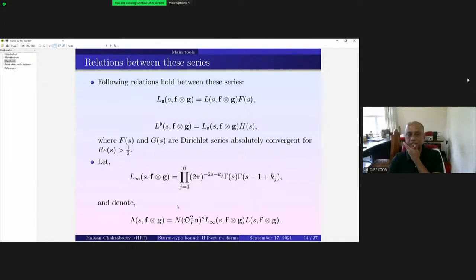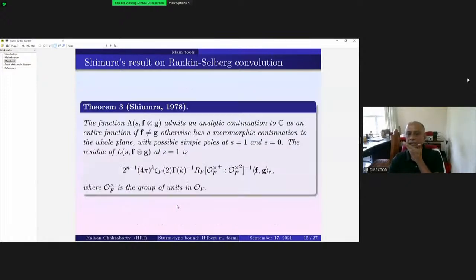Now this is a result of Shimura who tells you that the function, this lambda, admits an analytic continuation to C as an entire function if f not equals g. If f not equals g it's entire, otherwise it has a meromorphic continuation for the whole plane with possible simple poles at one and at zero, and the residue at one is given by this if f is equal to g.